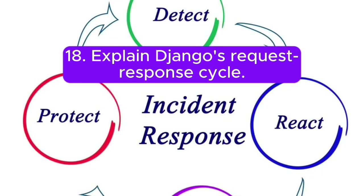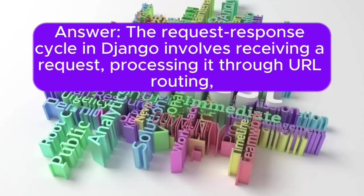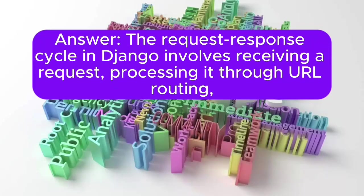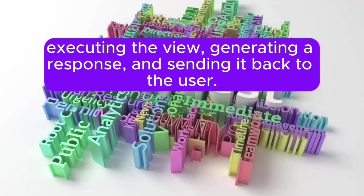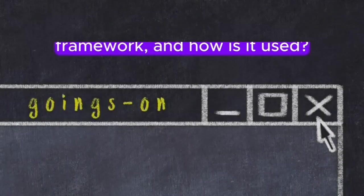Question 18: Explain Django's request-response cycle. Answer: The request-response cycle in Django involves receiving a request, processing it through URL routing, executing the view, generating a response, and sending it back to the user.